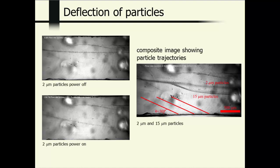Here we have a mixture of 2 micrometer particles and 15 micrometer particles. This is not a snapshot. This is now a composite image. So it shows the pathway of many particles. And you can see that the 15 micrometer particles are deflected into a node line and the 2 micrometer particles are not.